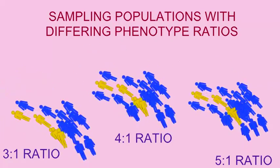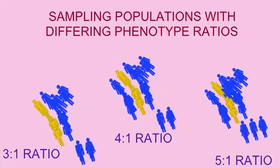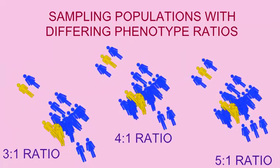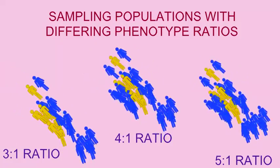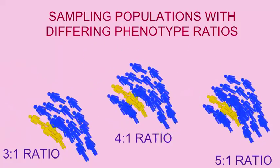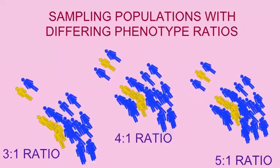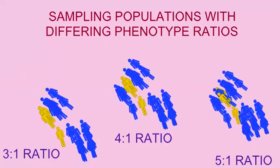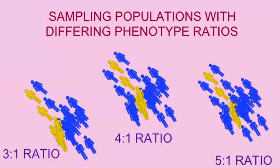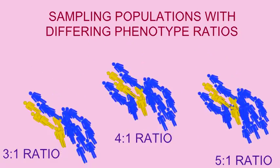This second population has individuals in a 4 to 1 ratio, where 4 fifths of the individuals are blue and 1 fifth are yellow.